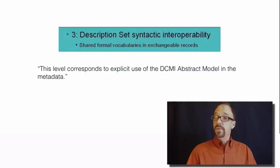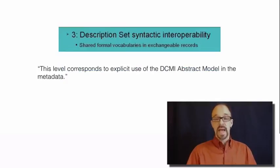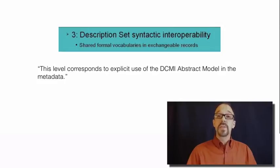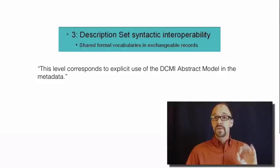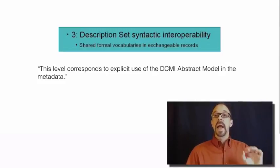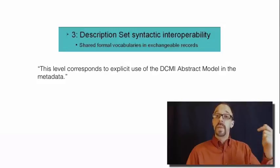Level three, on the other hand, corresponds to explicit use of the abstract model. You really do need to point to the RDF document that formally defines 'property' if you're going to say that you're using these elements, which are a type of property. Level three interoperability must comply with the abstract model, and in order to comply it must make explicit use of these RDF documents.